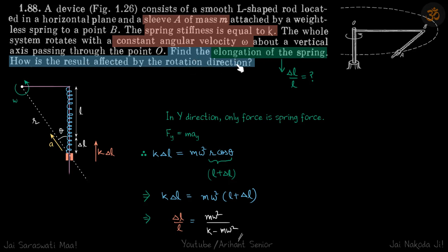We need to find the elongation of the spring and how is the result affected by the rotation direction. He has not given the length l, the initial length of the spring, so let's assume that because in the answer what is given is delta l by l. So this is what we need to find.